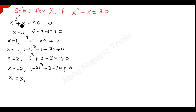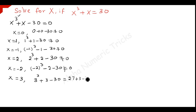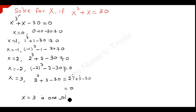Put x equal to 3 here. When you substitute x equal to 3: 3 cubed plus 3 minus 30. 3 cubed is 27, so 27 plus 3 minus 30, that is 30 minus 30, which is equal to 0. So from that, x equal to 3 is one solution for this equation.